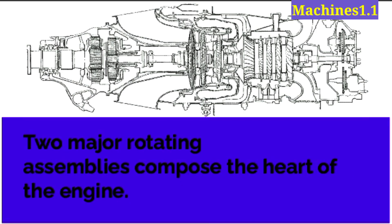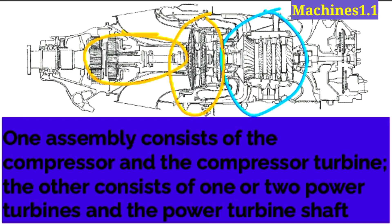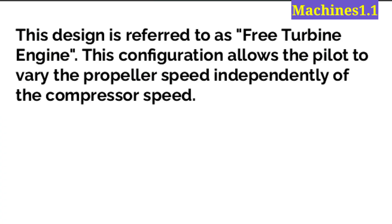Two major rotating assemblies compose the heart of the engine. Assembly number one consists of the compressor and the compressor turbine — here in this position. Assembly number two consists of the power turbine and the power turbine shaft — here are the power turbines and this is the power turbine shaft. These are the two main assemblies.